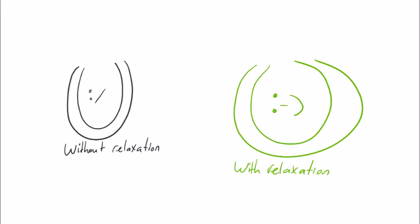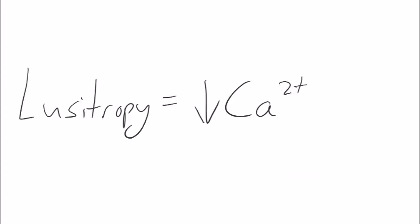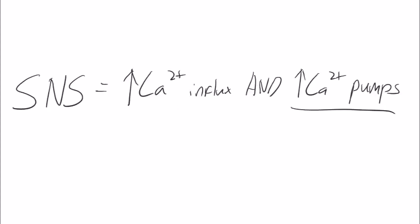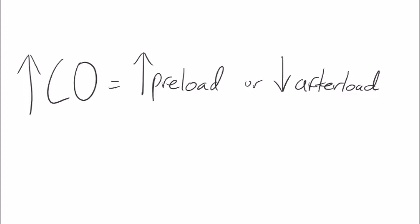Lusitropy is very dependent on the ability to remove calcium from a cell, but fortunately, the sympathetic nervous system doesn't just increase calcium concentrations, it also upregulates the calcium pumps that allow us to move calcium outside of a cell in between each beat. That way, we can get calcium outside of a heart almost as quickly as we can get it in.